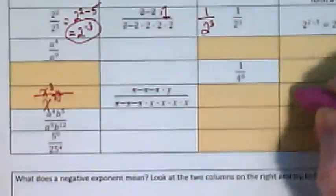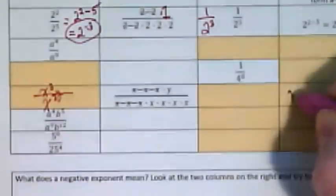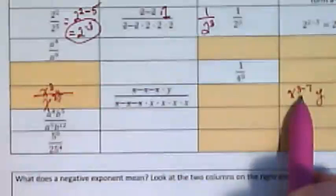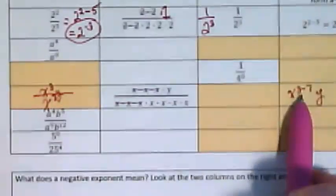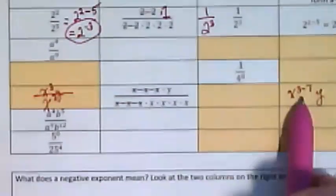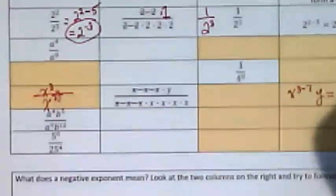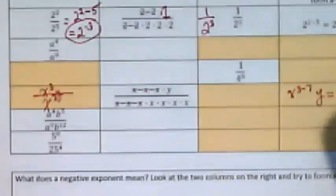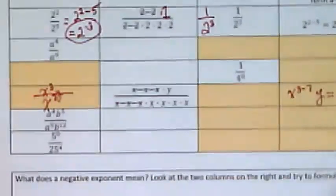I'm going to do the quotient rule first. So this would be x to the third minus 7 times y. What's going to happen here? We're going to end up with a negative 4. So this would be rewritten as x to the negative 4 times y.